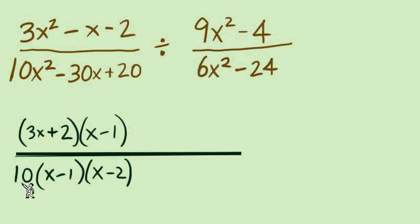Our denominator had that 10 for the GCF, and then (x - 1)(x - 2). Remember this is a divide and we haven't flipped this fraction yet, so I'll do it at this time.